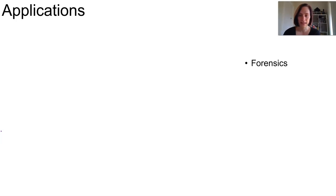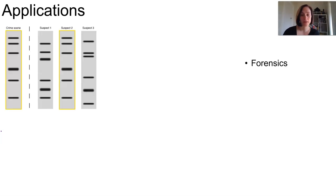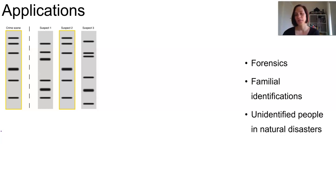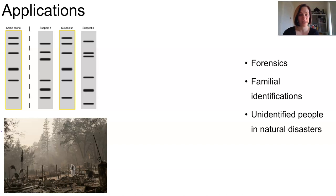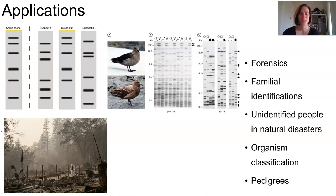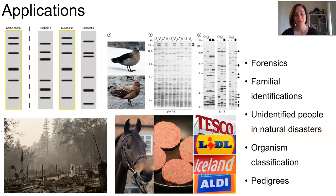DNA profiling can be applied extensively in forensics through comparison of crime scene evidence to genomes of suspects, victims, and others present at the scene. It can be used to clarify familial identifications, genealogy, missing persons, and unidentified people in natural disasters. It's also used to clarify organism identification, classification, and phylogeny — for example, determining the pedigrees of valuable animals like racehorses and purebred dogs, and it can even trace meat back to an animal source.